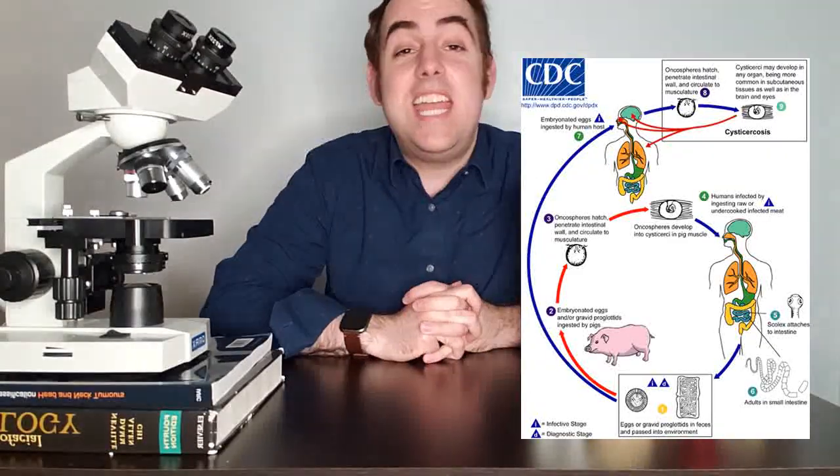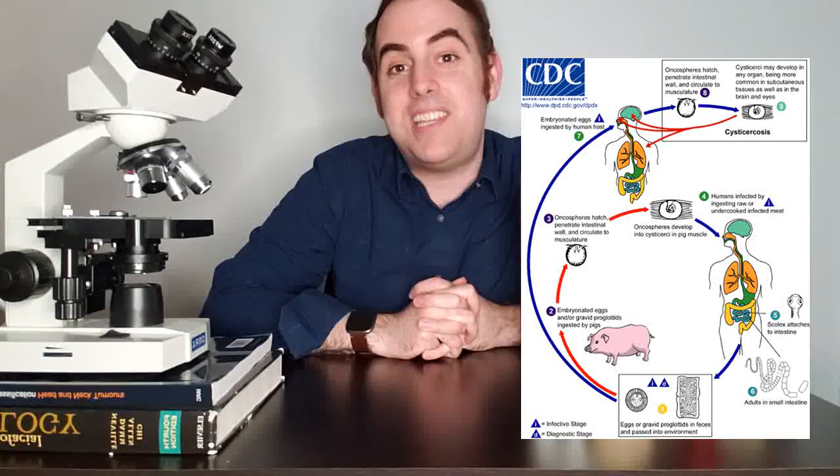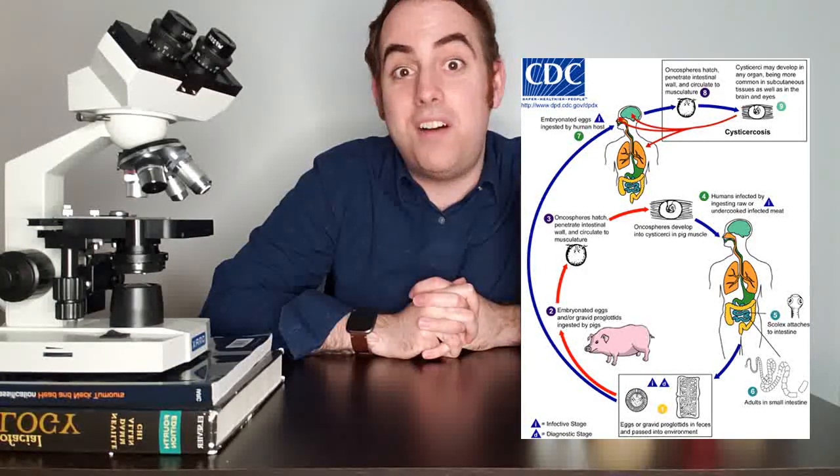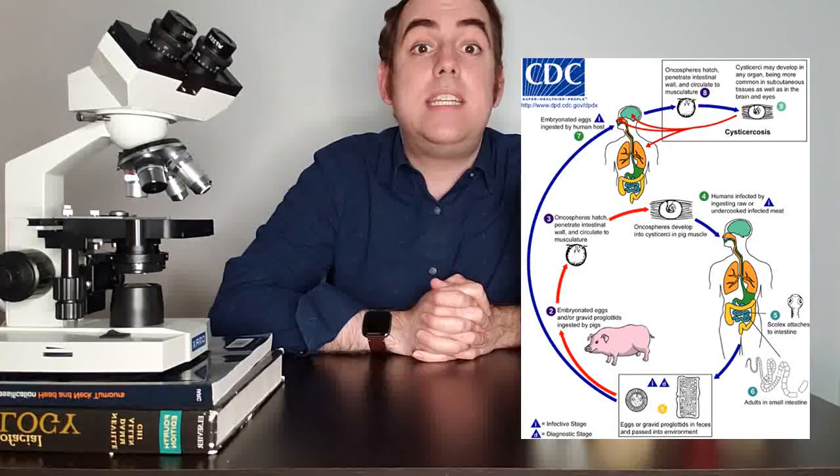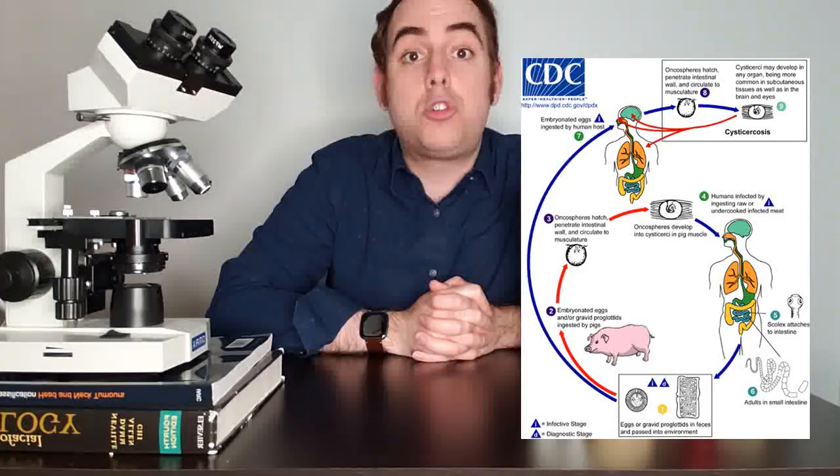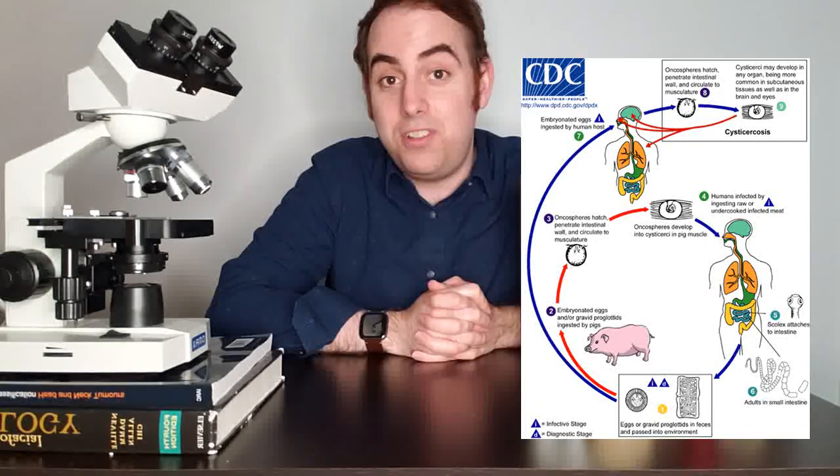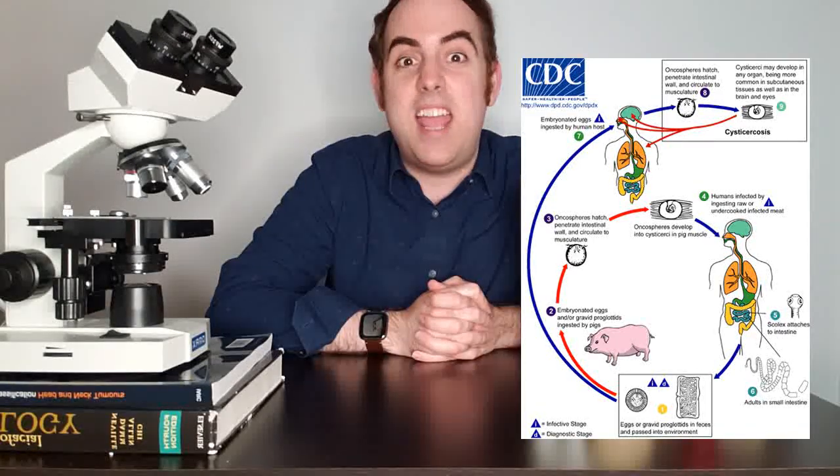So interestingly enough, in our case, the patient is actually serving in substitute of the pig. So the patient consumed contaminated water and then the Taenia solium larvae traveled to that patient's muscle in the upper lip and made a home.